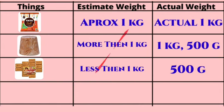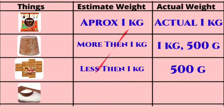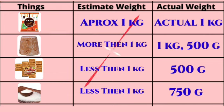Fourth one, five cups of sugar: the estimated weight is less than one kg, while the actual weight is 750 grams.